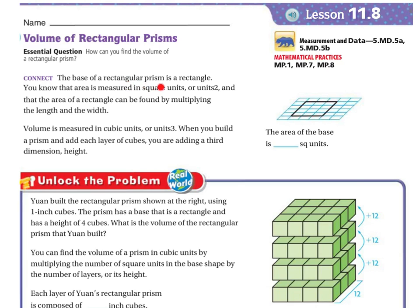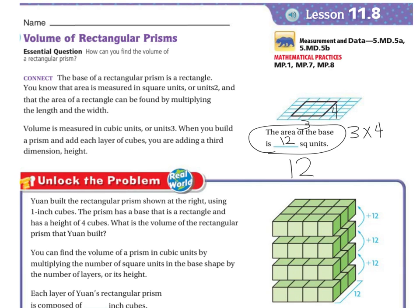Let's connect. The base of a rectangular prism is a rectangle. You know that area is measured in square units, or units squared. The area of a rectangle can be found by multiplying the length and the width. So the area of the base here is 3 wide and 4 long. 3 times 4 is 12, so the area of the base is 12 square units, or 12 units squared.